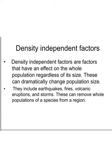Density independent factors are factors that have an effect on the whole population regardless of its size, whether it's a thousand or two. These can dramatically change population size and include earthquakes, fires, volcanic eruptions and storms, and can remove whole populations of a species from a region. A key point is that density independent factors affect the population independently of its size — for example, the Australian wildfires at the start of this year decimated populations, and that is a density independent factor.